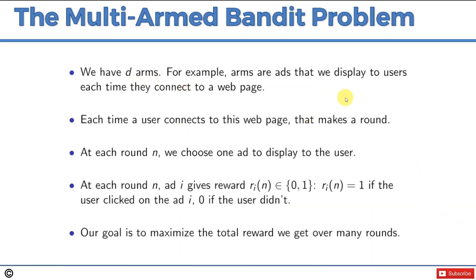We've got d-arms — arms are ads we display to users each time they connect to a web page. Each time a user connects is considered a round. At each round, we choose which ad to display, and the ad gives us a reward of either 0 or 1: 1 if the ad is clicked, 0 if not. In the case of actual bandits, it'll be a monetary reward. Our goal is to maximize the total reward we get over many rounds.